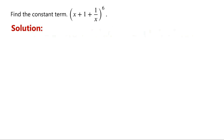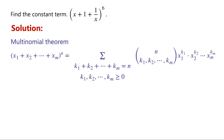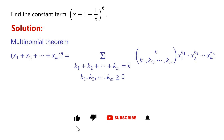The multinomial theorem states that the sum of m variables to the power of n is equal to the sum of the terms with the sum of m non-negative integers k1, k2 through km equals n, and n choose k1, k2 through km, times x1 to the power of k1.